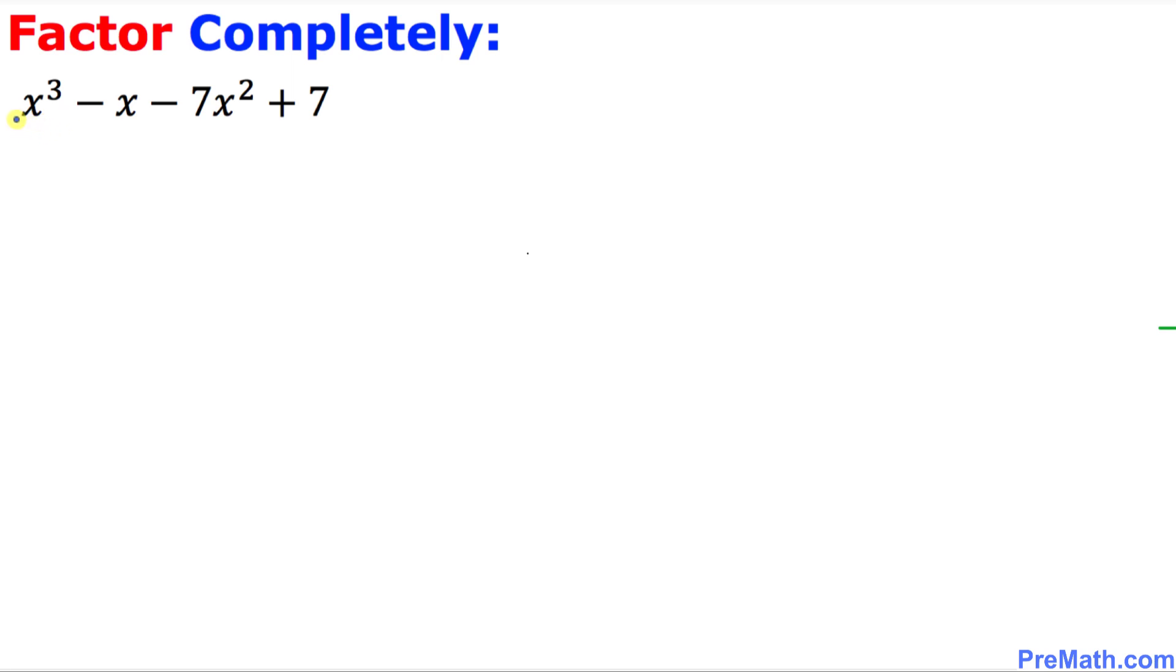Let's focus on this very first pair, right up here. Between these two terms, x is in common. So I can factor out x outside and we're going to have x squared minus 1 in the parentheses. Let's focus on this second pair, these next two terms.